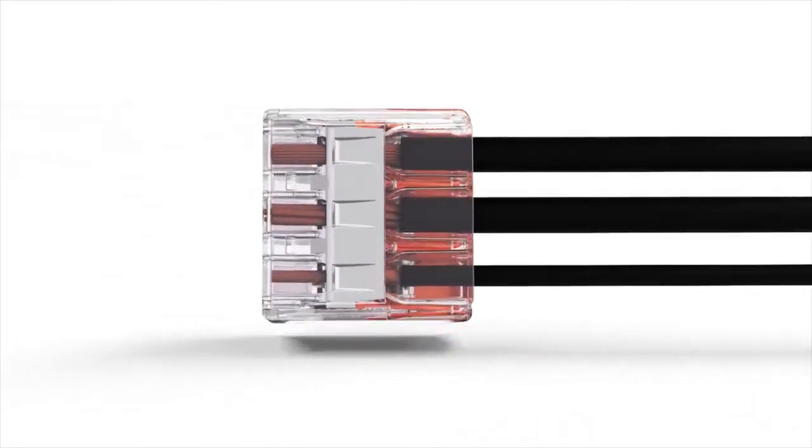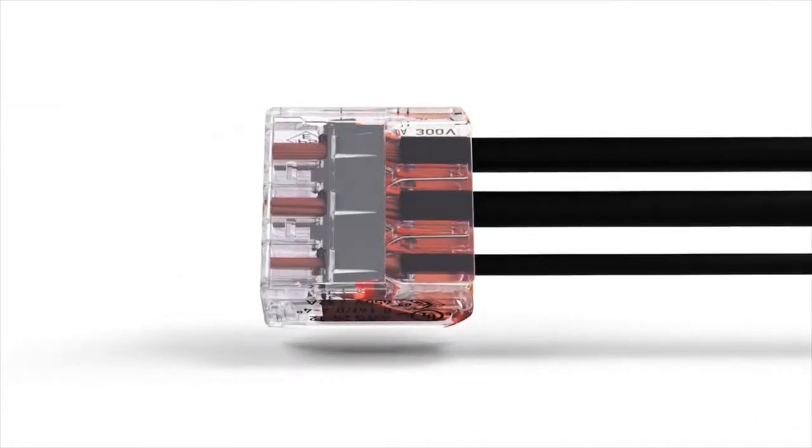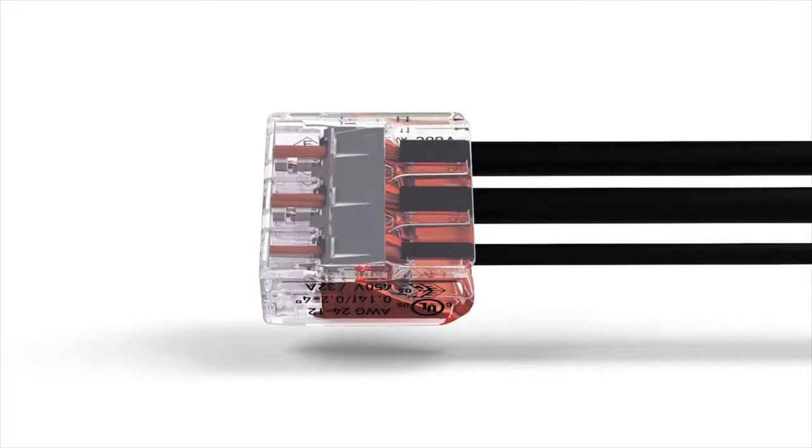The transparent housing permits visual inspection of the conductor position. It clearly shows that conductors have been stripped and inserted properly.